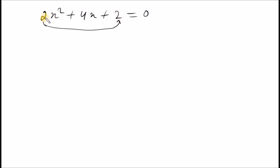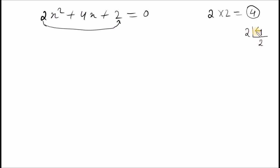In the factorization method, the coefficient of x squared and the constant term is the last term. 2 times 2 is the coefficient of x squared. A factor is the coefficient of x squared. The coefficient of 4 is the coefficient of x squared and constant term. This is the range, so if you multiply, then 2 into 2 equals 4.